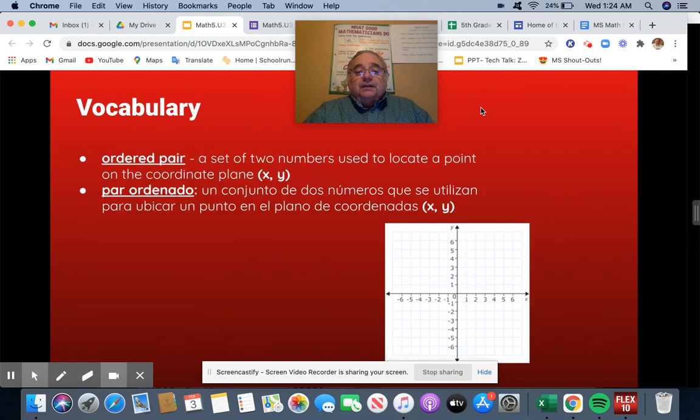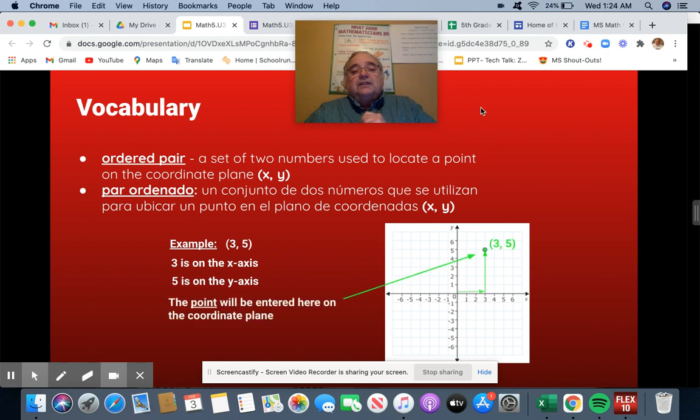We have an ordered pair. We're going to show you that the ordered pair is signified by x and y. For an example, we have 3 and 5. 3 is on the x-axis. We go over 3 to the right, and then up 5 on the y-axis. That gives us the point (3,5), and we label it.